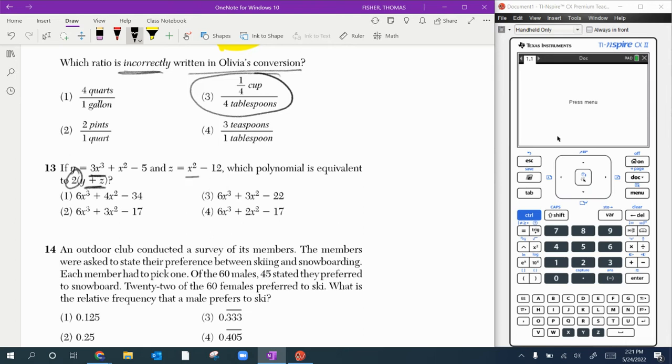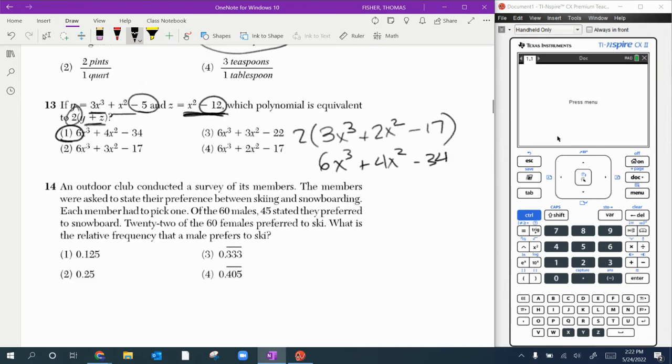I'm going to do the adding first because it says y plus z, and then we'll double the whole thing. So 3x cubed, there are no other x cubes, so it'll be just 3x cubed. Then x squared plus x squared would be 2x squared. And then a minus 12 and a minus 5 would be minus 17. That's y plus z. So then 2 times it would just be doubling everything. So 6x cubed plus 4x squared minus 34. And there it is, choice 1.